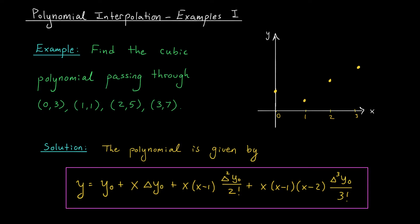Hi everyone and welcome back. In this video I'd like to use Newton's interpolating polynomial to find a cubic passing through the four data points shown here. These points were chosen to match the plot from our last video, so what we're going to do is find a cubic polynomial that passes through all four.